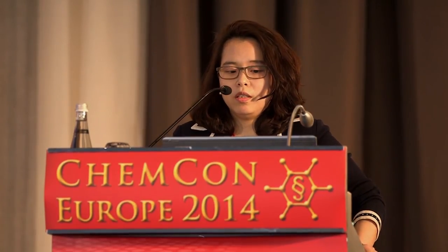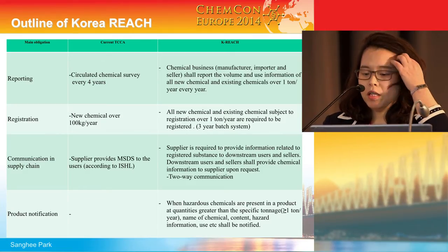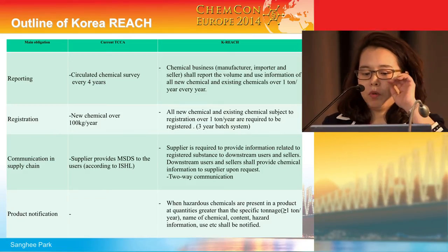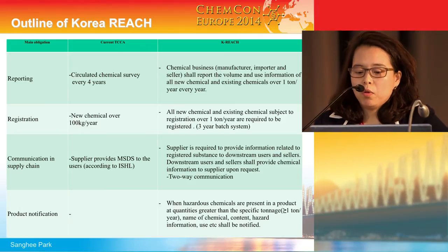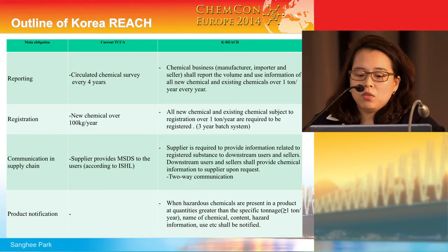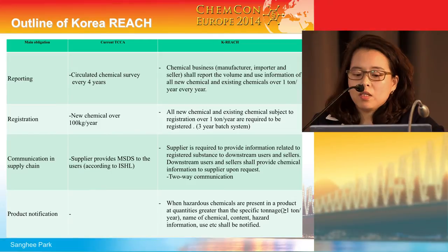I summarized the main requirements under K-REACH in this table. The first one is reporting. Manufacturers, importers, and sellers should report the volume and use information of all new chemicals and existing chemicals over one ton per year, every year.